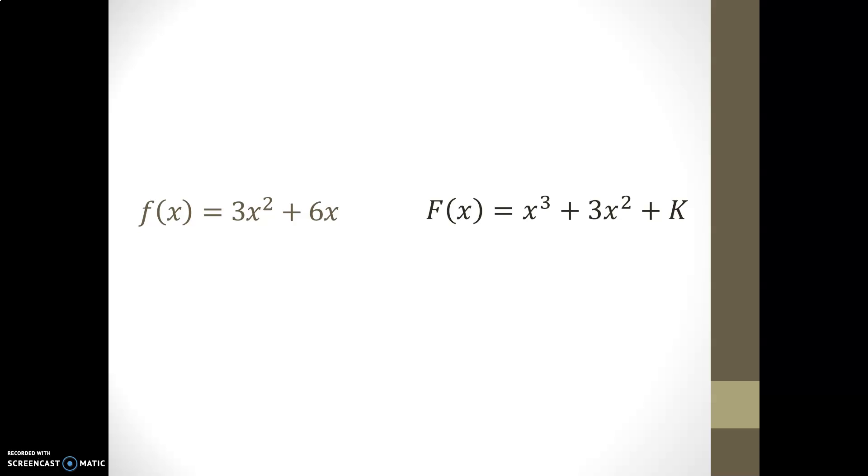Here's an example that we covered where two functions are related through either the anti-differentiation or the differentiation process. When performing the derivative of function big F, the function little f is obtained. This operation is called the derivative.